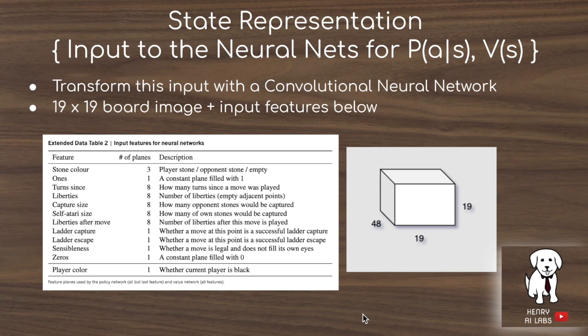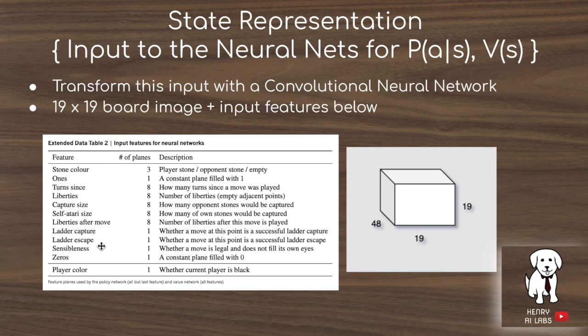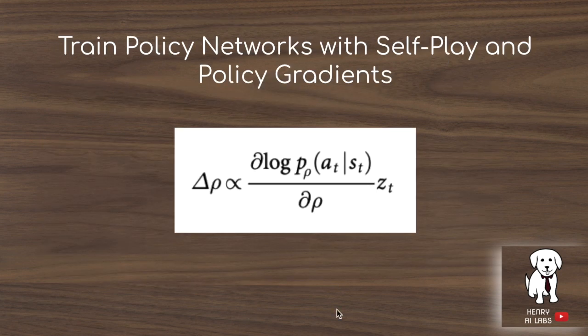The supervised learning network maps from state to action, as does the value network and the policy network trained with policy gradients. The state representation input to the neural networks consists of the 19×19 board position plus 47 different handcrafted features, transformed into planes forming the depth dimension of a tensor input to the convolutional neural network.